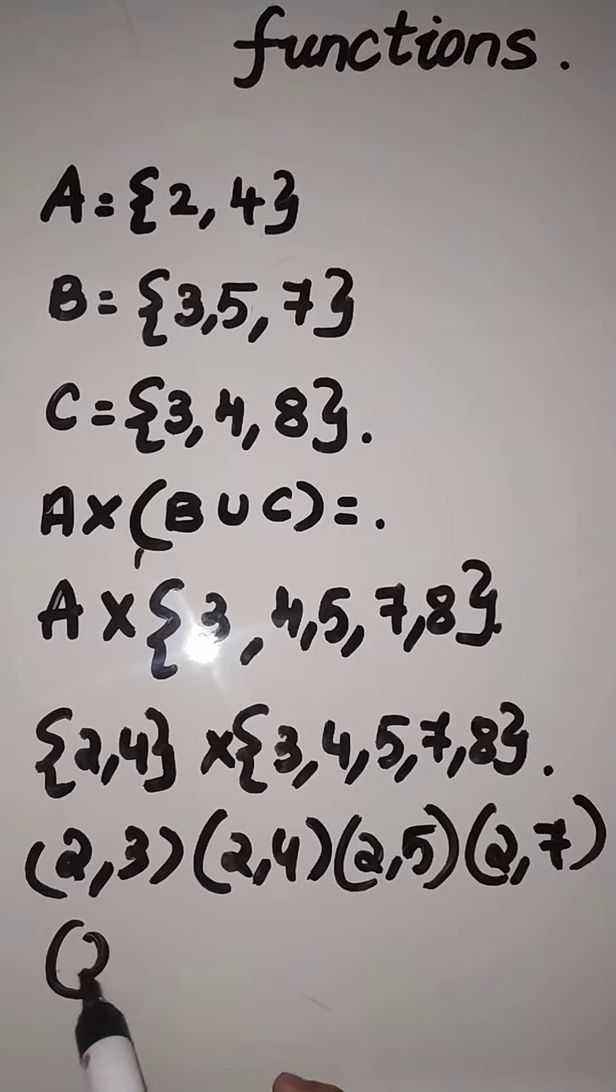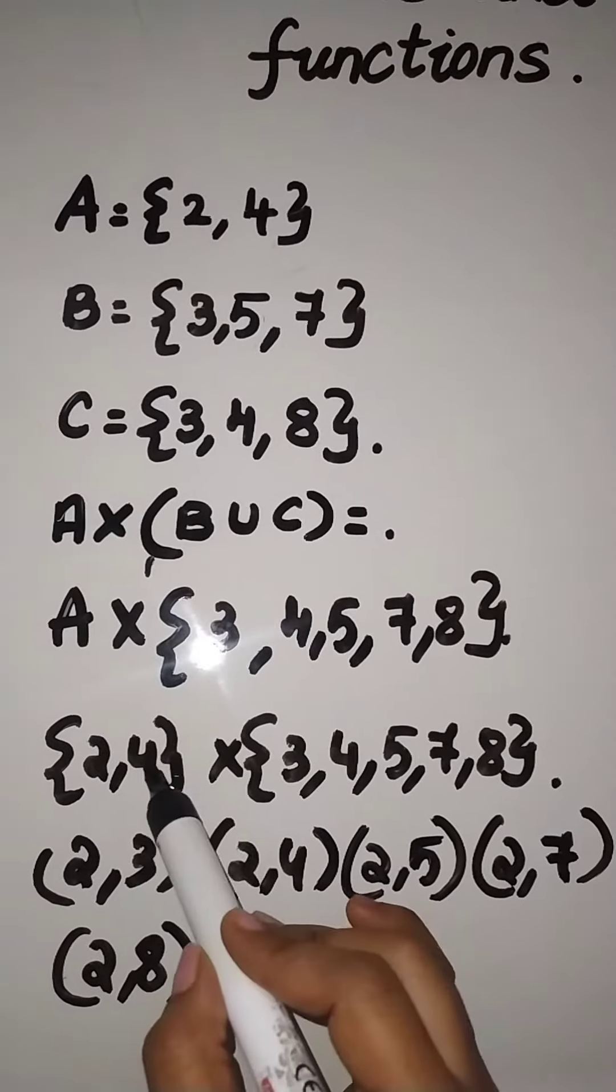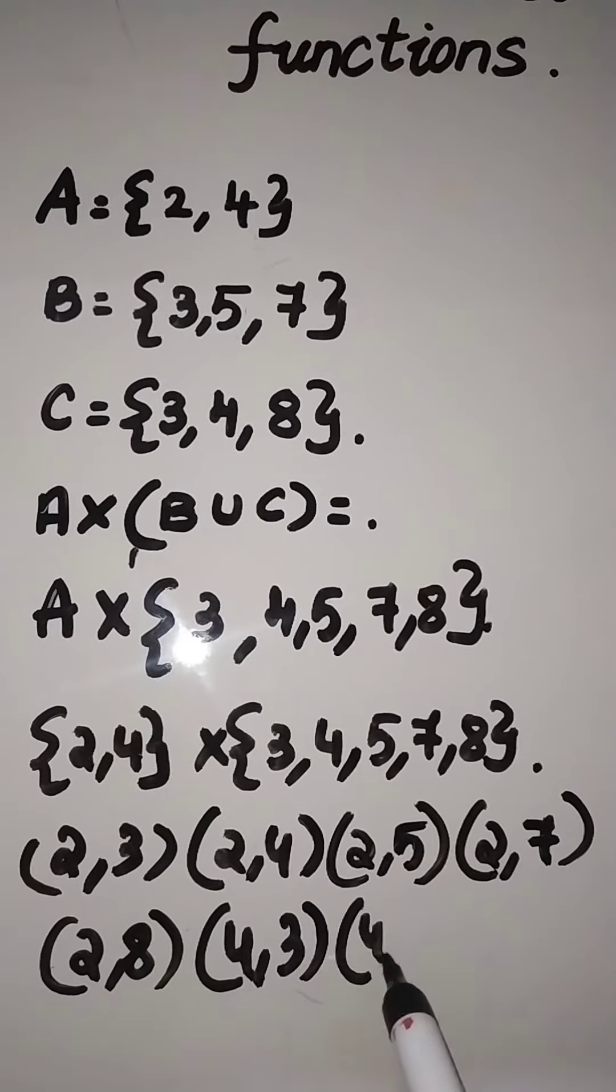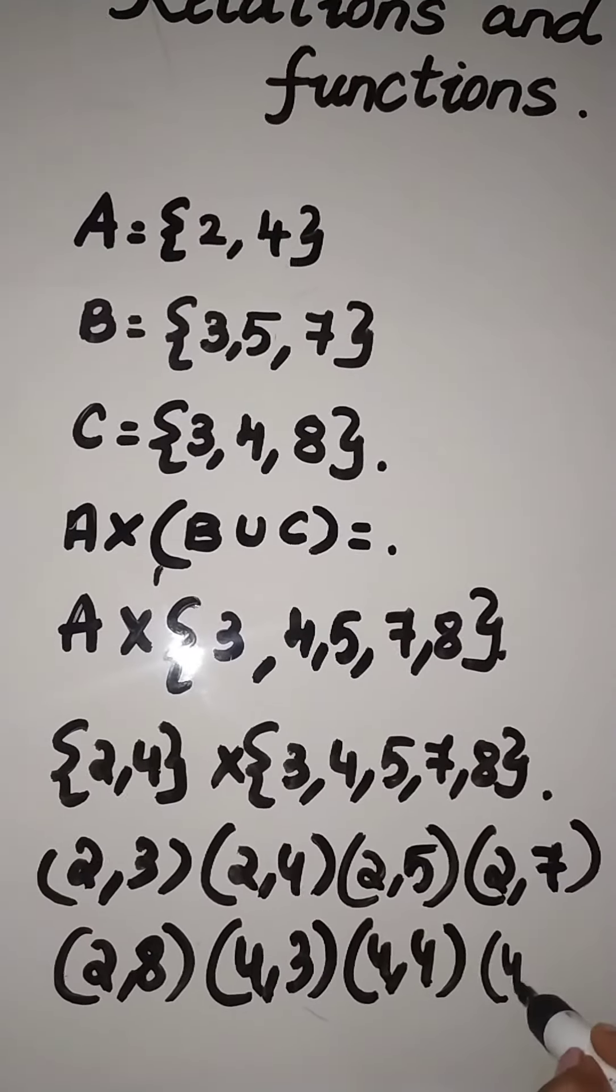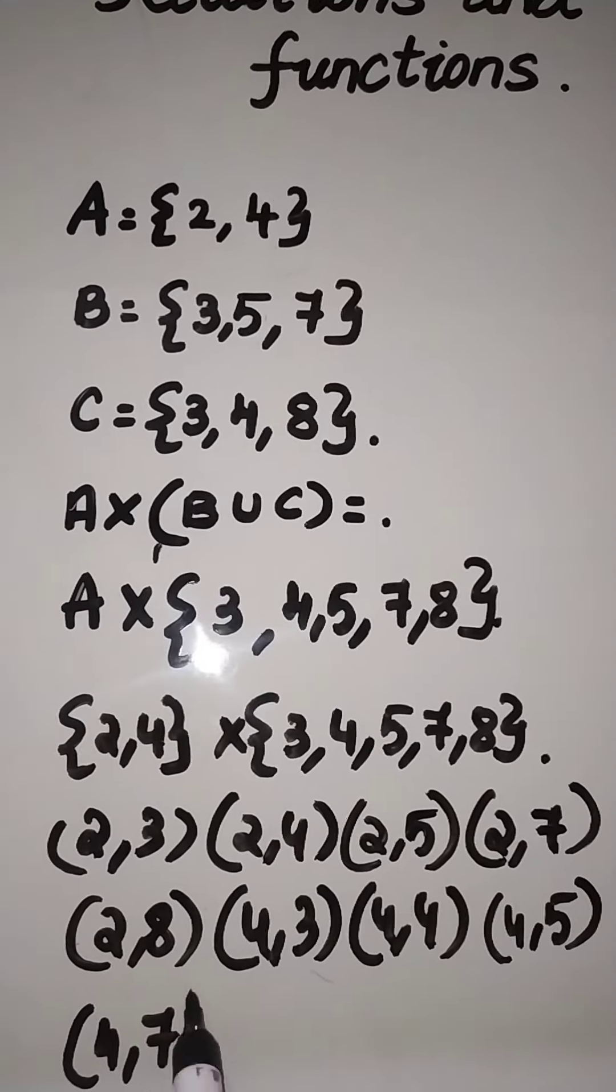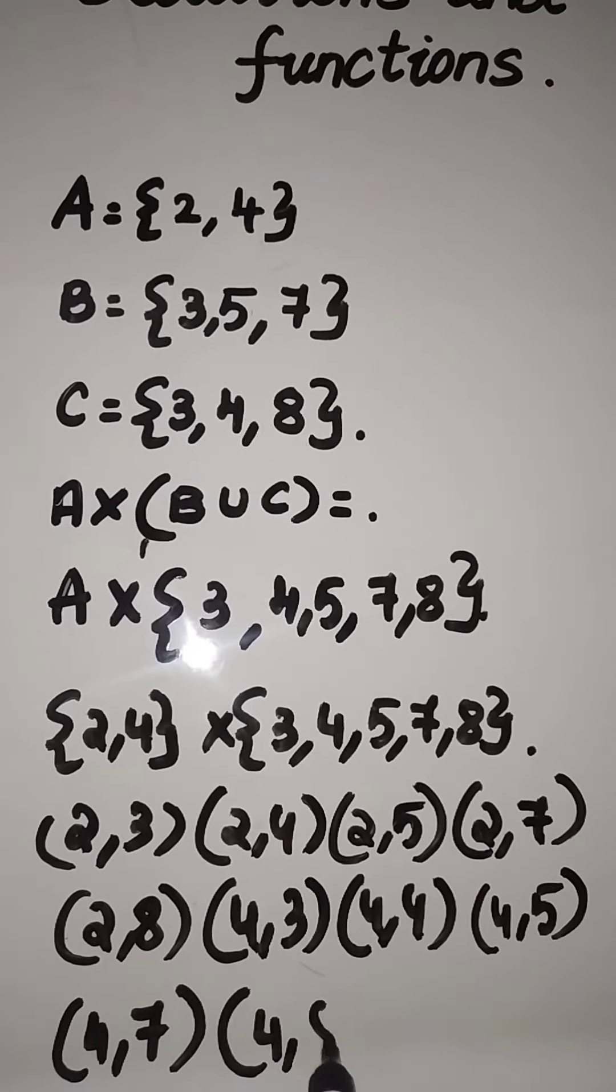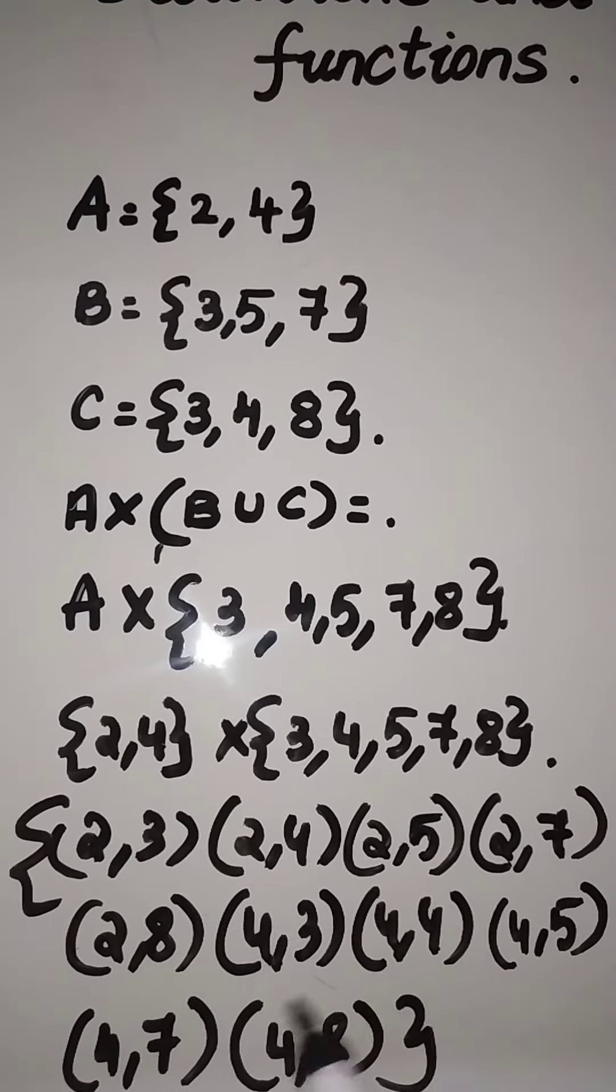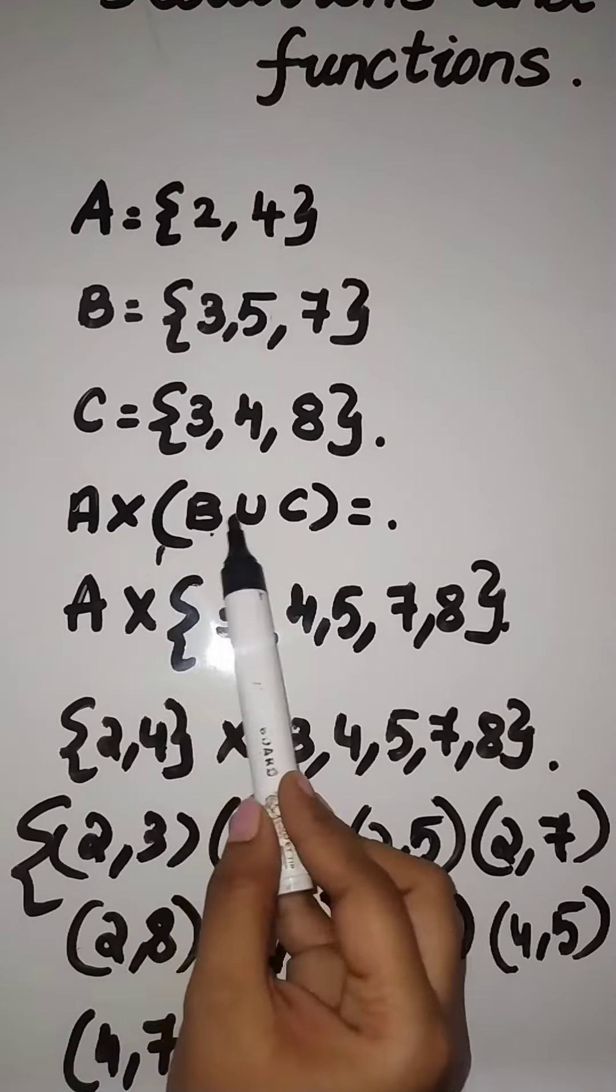2, 8. Now we'll multiply with 4. You will get 4, 3, 4, 4, then 4, 5, 4, 7, and 4, 8. So these are the elements when you multiply A into B union C.